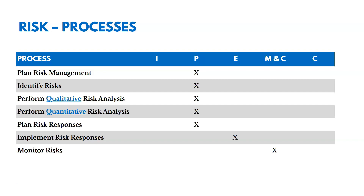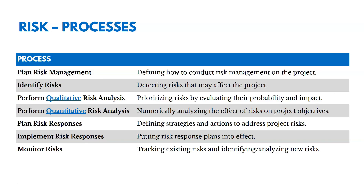There are seven processes in this chapter: five are in planning, one is in executing, and one is in monitoring and controlling. With Plan Risk Management, we're defining how to conduct risk management on the project — who can be involved, what types of tools we're going to use. With Identify Risks, we're detecting risks that may affect the project and putting those on the risk register.